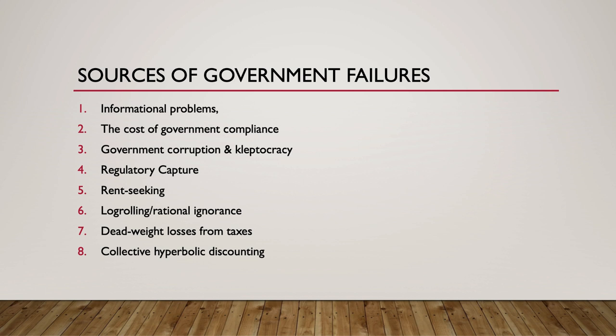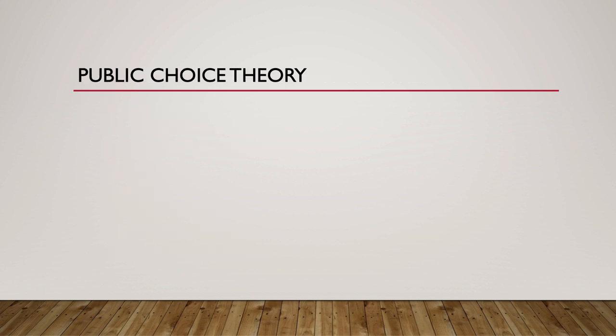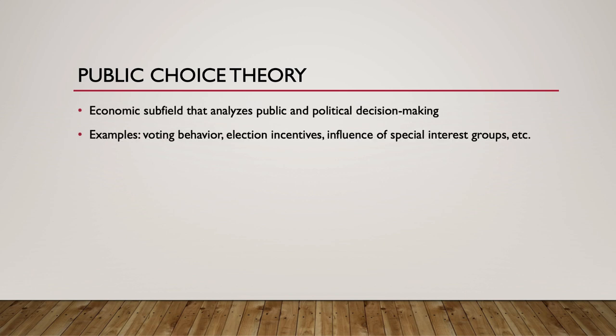Hyperbolic discounting may be a satisfactory explanation for long-lived environmental problems as well, like climate change and the trade-off that exists between higher economic growth today and irreversible environmental catastrophe in the future. It is the economic subfield of public choice theory that analyzes public and political decision-making, including voting behavior, election incentives, and the influence of special interest groups.